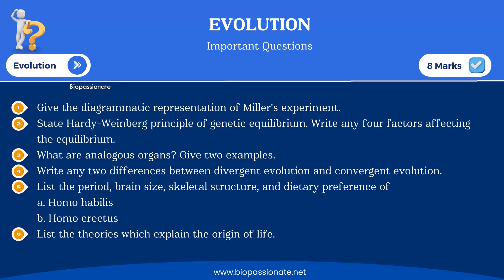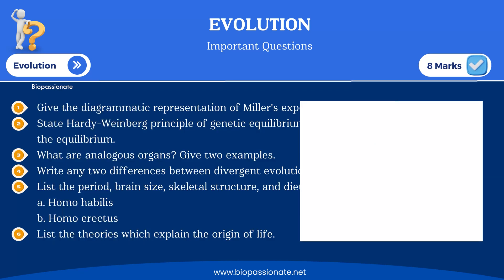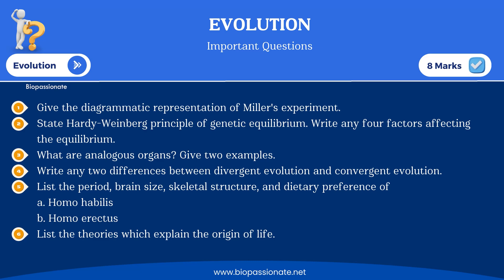For the Evolution chapter, here are the important questions: give the diagrammatic representation of Miller's experiment for three to five marks; state the Hardy-Weinberg principle of genetic equilibrium and write any four factors affecting the equilibrium for three marks; what are analogous organs — give two examples for three marks; write any two differences between divergent evolution and convergent evolution for two marks; list the period, brain size, skeletal structure, and dietary preference of Homo habilis and Homo erectus.